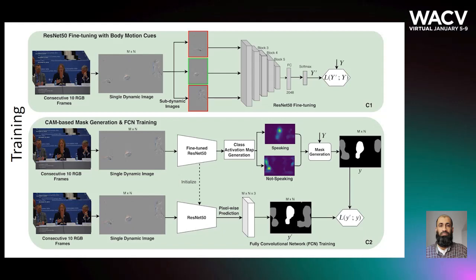Multiple sub-dynamic images with speaking or not-speaking labels are used to fine-tune a ResNet-50. The fine-tuned ResNet is used to obtain class activation maps, which are further used for training a fully convolutional network performing segmentation. For class activation map-based mask generation, we adopted the GradCam method.